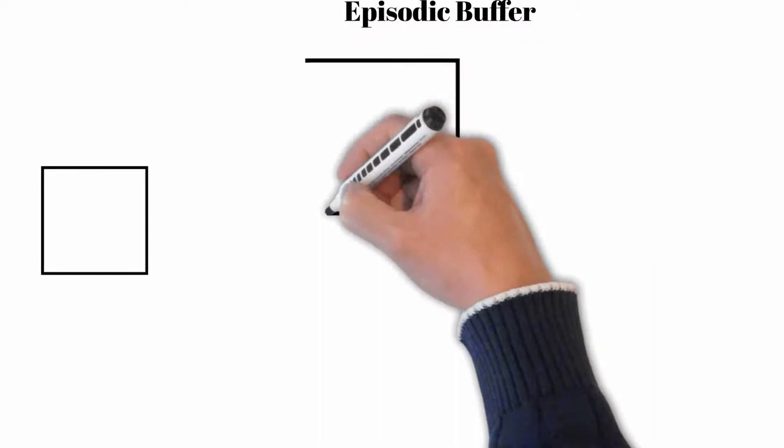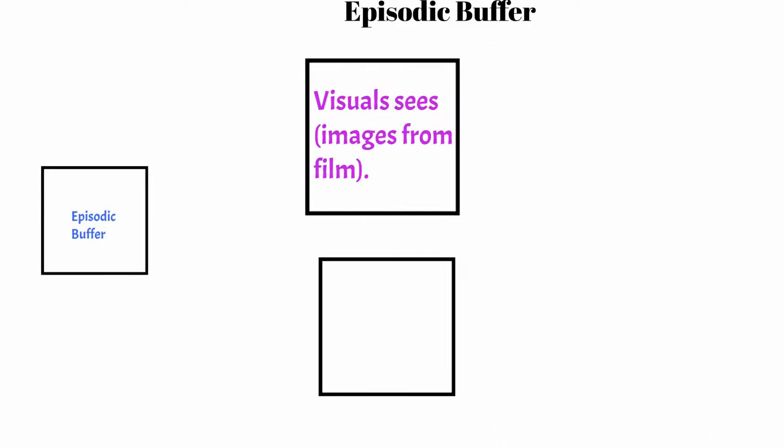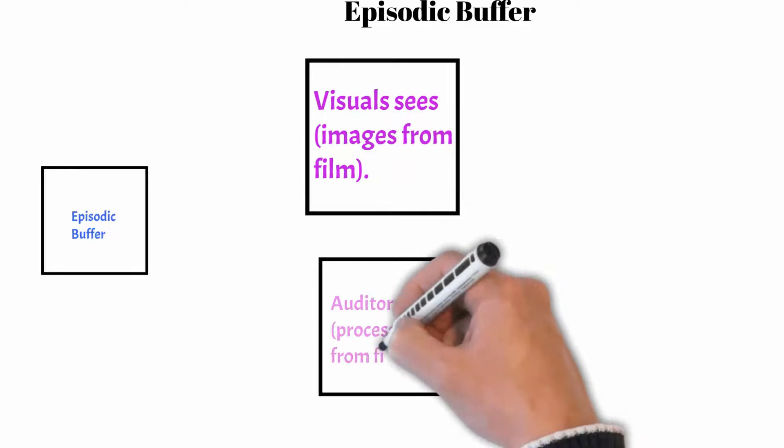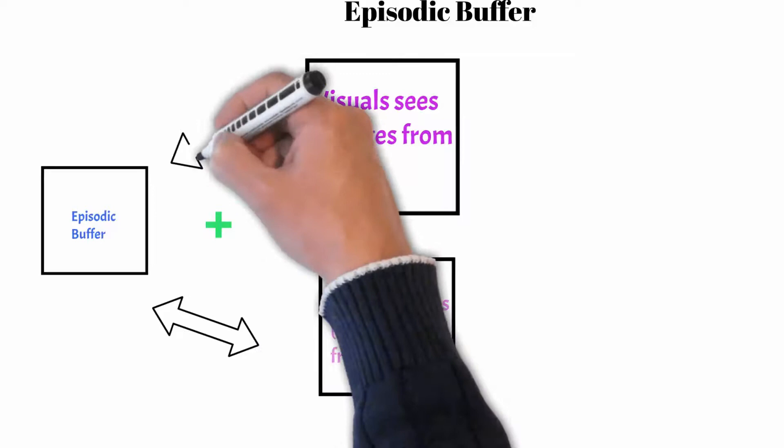Let's examine the episodic buffer. In 2000, Baddeley and Hitch revisited the experimental evidence and concluded that a new area was justified, namely the episodic buffer. This area, it is claimed, allows mental processes to associate connected information together. If information in a film screen is rightly linked together, the episodic buffer will associate it together.